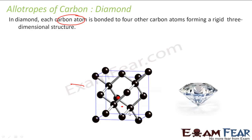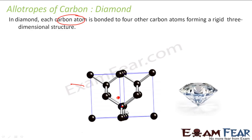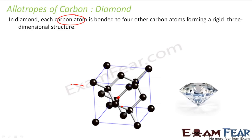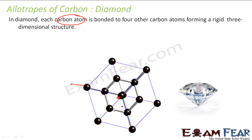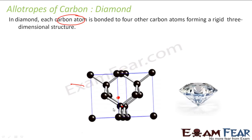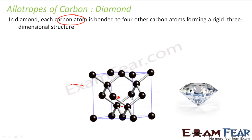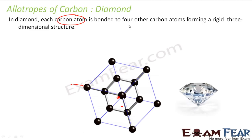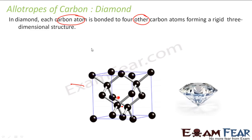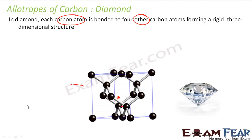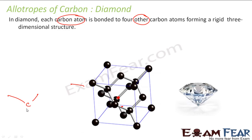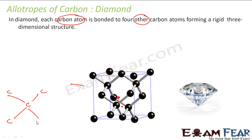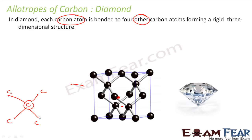If you look at one particular carbon atom in the diagram, it has four bonds — one, two, three, and four carbon atoms connected to it. And that is how diamond is formed, where each carbon atom is linked to four other carbon atoms. This is the hardest substance known.